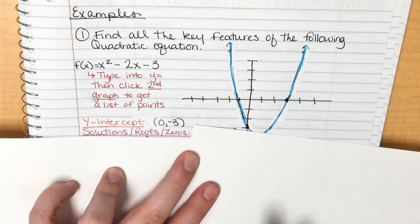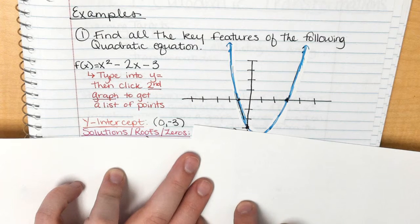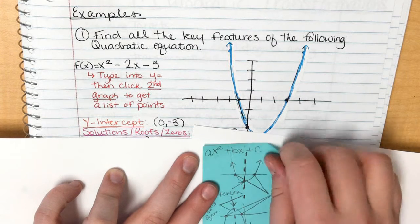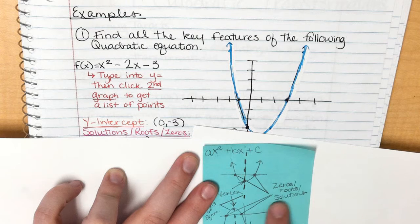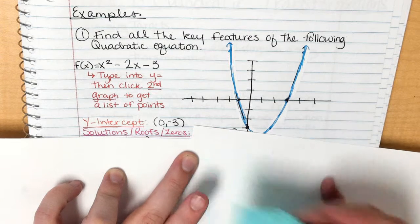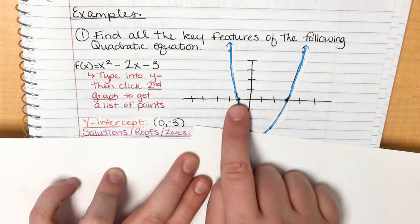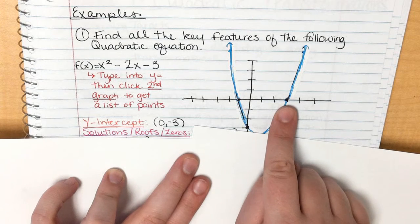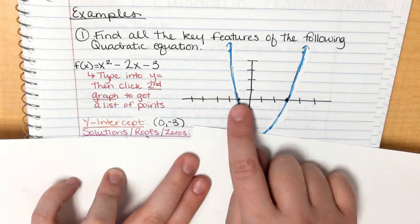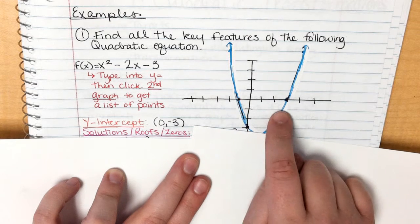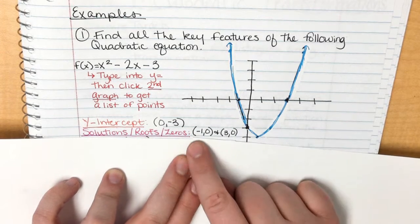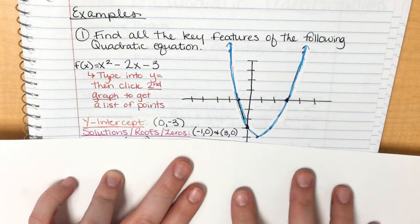The zeros, roots, and solutions are where the graph crosses the x-axis — remember, multiple names for the same thing. The graph crosses at x = −1 and x = 3. We write these as coordinate points: (−1, 0) and (3, 0).